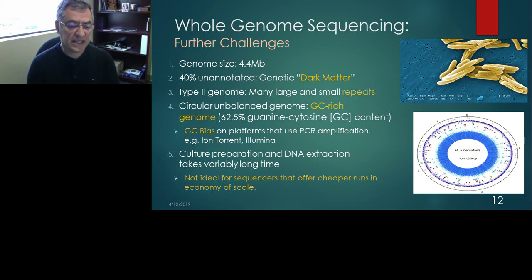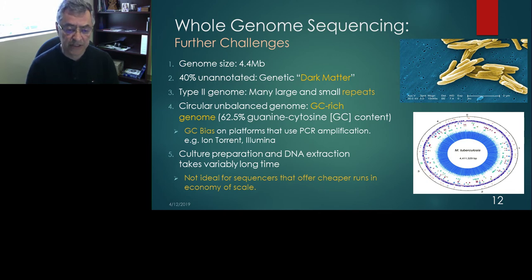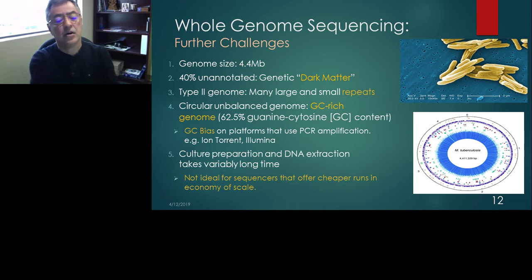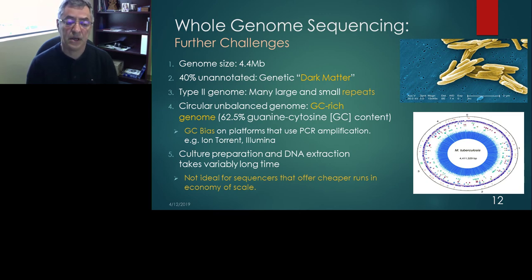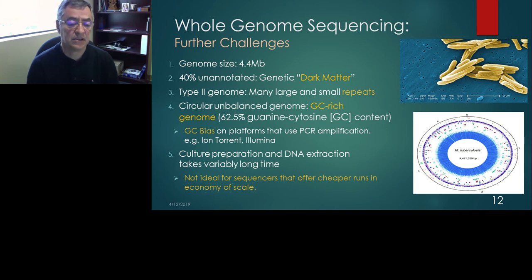Culture preparation and DNA extraction take variably long time. For reasons we don't fully understand, certain strains grow a bit faster and certain grow slower. For platforms like Illumina that offer cheaper runs due to economies of scale, it becomes a challenge to run DNA from several strains together unless you operate a laboratory tied to a clinic that deals with many tuberculosis cases.